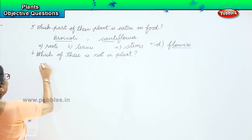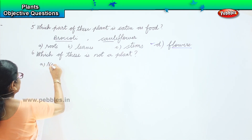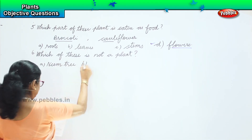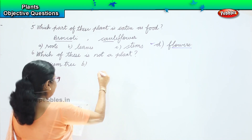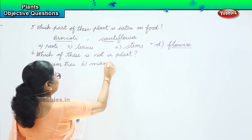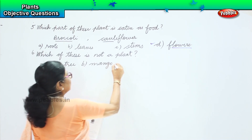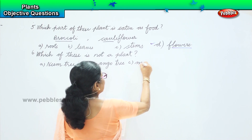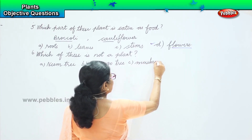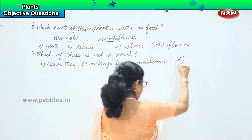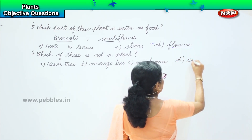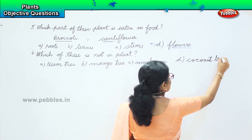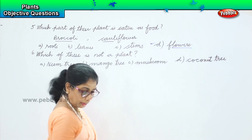Option A: neem tree. Option B: mango tree. Option C: mushroom. Option D: coconut tree. Which of these is not a plant?